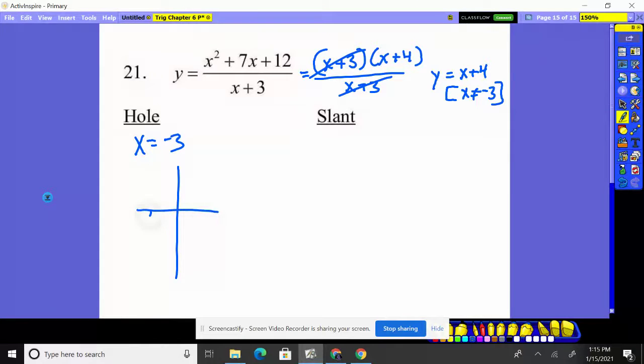So if you have the graph and here's negative three, and let's say this line, well, we do know it has a y intercept at four and then slope of one. So it's going like this. When you get to that negative three value, it's going to be an open circle. There's going to be a hole there.